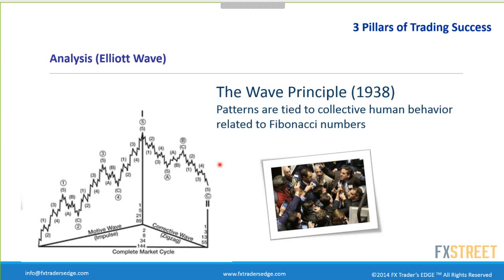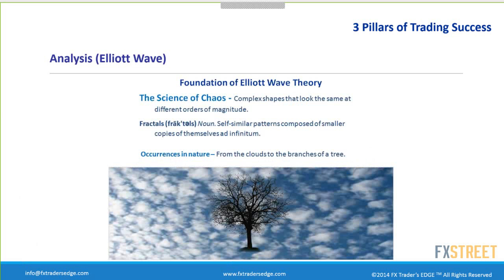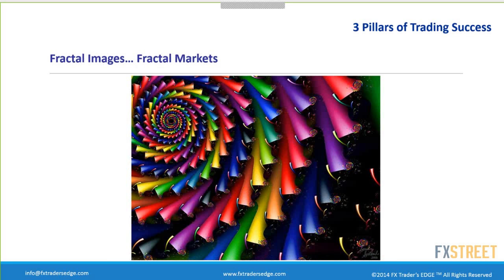Another key point: nature is fractal, and so is the market. Fractal means self-similar patterns composed of smaller copies of themselves, ad infinitum. This repetition occurs in nature — in clouds, branches of trees, and fractal images. If you take a smaller portion of a fractal image and magnify it, you find a new image with the same structure. The market behaves exactly the same way.